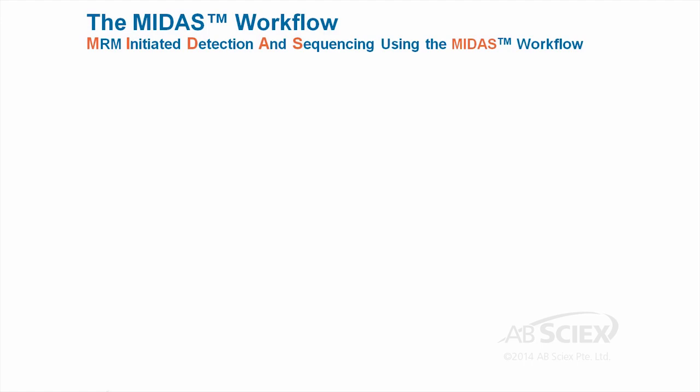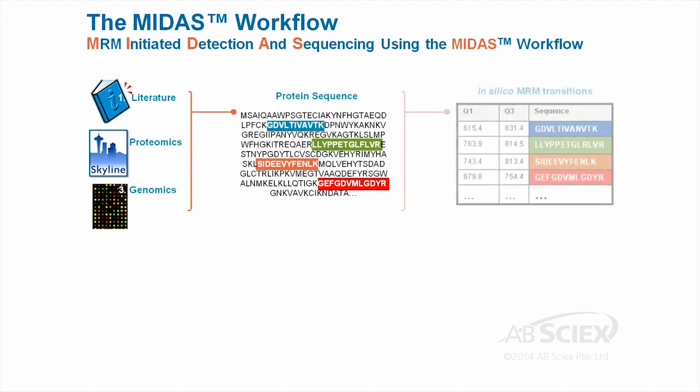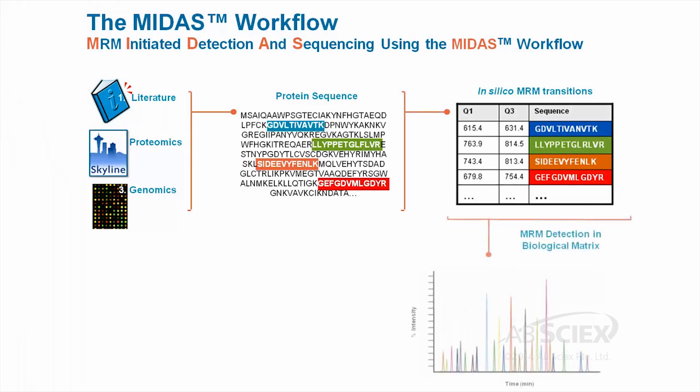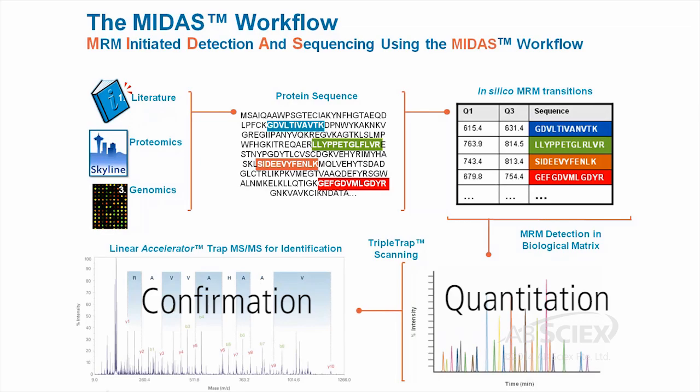One example is the MRM-triggered MS-MS or MIDAS workflow, which facilitates the creation and qualification of MRM assays. This can be combined with scheduled MRM-PRO algorithm to enable highly multiplexed experiments that deliver excellent reproducibility and full-scan MS-MS confirmation.